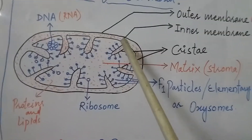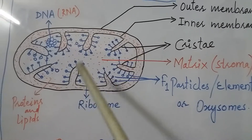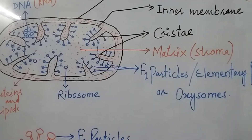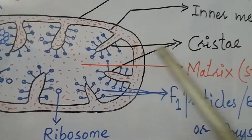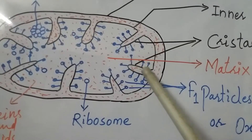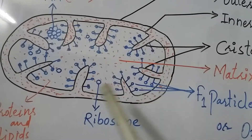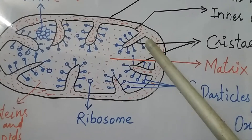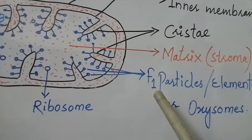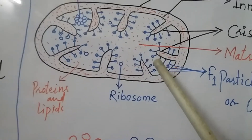The inner membrane converts into finger-like projections called infoldings. These finger-like projections of the inner membrane are given the name cristae. Each crista bears numerous small particles known as F1 particles, also called elementary particles or oxysomes.